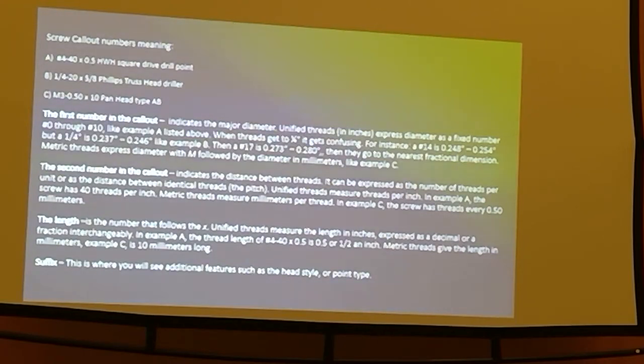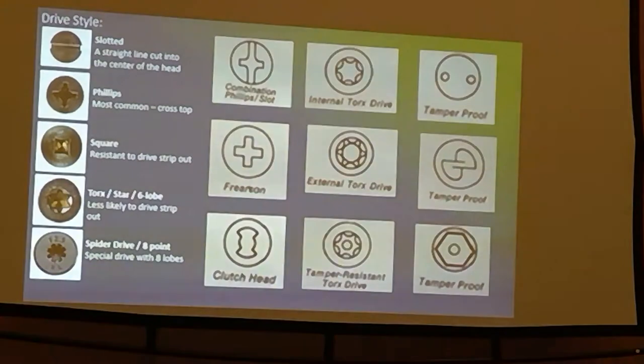And so that first is a hex washer head, square drive, drill point. Then the second one, B, is a Phillips truss head driller. That's just a flat screw head. I've got some descriptions and images appear in a few minutes. And then that number C is the metric version of thread call outs. The M is like an M3. So it would be 3 millimeters. And then the dash .5 is a half millimeter for that pitch. And then length is by 10 millimeters. And that's a head type AB. I think I've got some images of that.